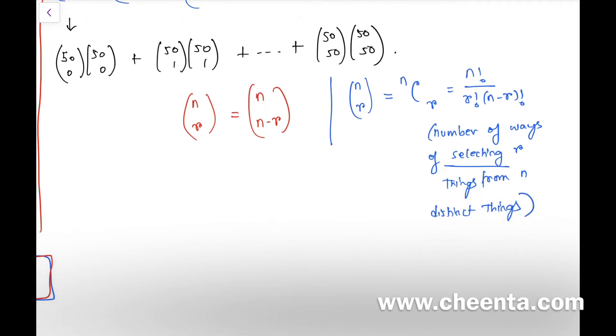So we have found this beautiful small combinatorial identity in the previous video, and we actually proved it using combinatorial argument. We will use it here. (50 choose 0) is same as (50 choose 50-0). Similarly, (50 choose 1) can be written as (50 choose 50-1), and the last one (50 choose 50) can be written as (50 choose 50-50).